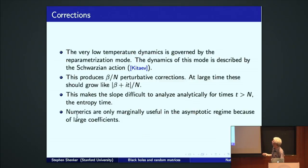The very low temperature dynamics is governed by this reparametrization mode that Juan discussed, the soft mode in the system. And the dynamics of this mode is described by the Schwarzian action. Now, this produces beta over N perturbative corrections. Remember, J is set to one. This is a nonlinear action that has interaction terms. Now, at large time, if you analytically continue, these go like beta plus IT over N. So at large time, these effects get larger. And so in fact, for times larger in N, it's hard to analyze what's going on. It's a big, interesting problem to know what the time dependence the Schwarzian derivative action predicts, okay?